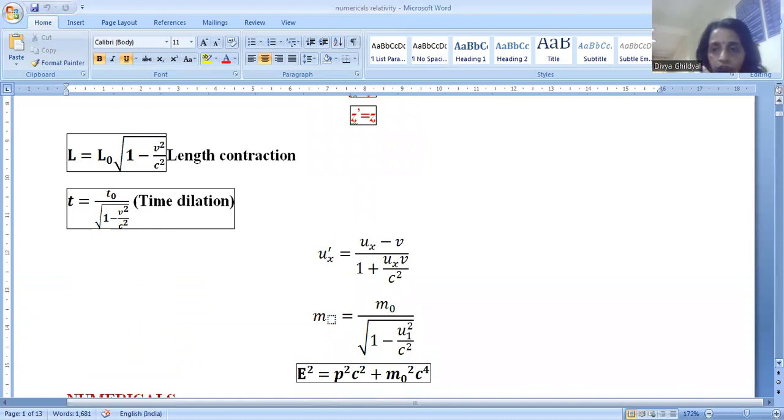Relativistic addition of velocity u_x dash is equal to u_x minus v upon 1 plus v by c square. Mass in relativistic frame of reference m is equal to m not upon under root 1 minus v square by c square, where m not is rest mass.